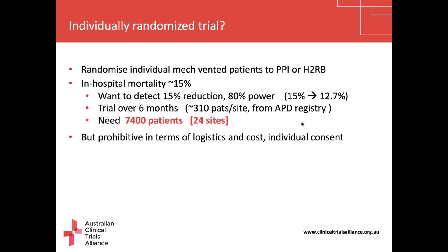For an individually randomised trial randomising ventilated patients to either PPI or H2RBs: in-hospital mortality is about 15%, and detecting a 15% relative reduction with 80% power corresponds to an absolute reduction of about 2.3%. With sites recruiting over six months — typically about 310 patients per site — the trial would need about 7,400 patients across 24 sites. This is possible in principle but quite prohibitive in terms of cost, logistics, and the need for individual consent.